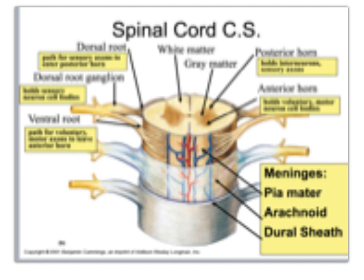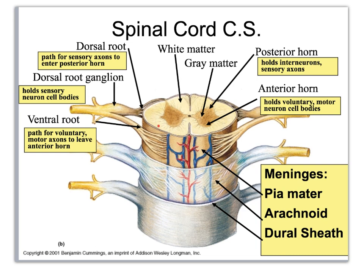Now looking at this cross-section of the spinal cord: you can see the white matter with myelinated fibers on the outside, and the gray matter — unmyelinated — on the inside. There is the anterior horn and the posterior horn. I visualize a butterfly: the shoulders of the butterfly are at the top, which is anterior, and the pointy tips of the wings are at the bottom, which is posterior.